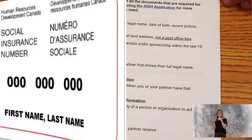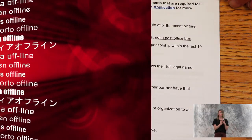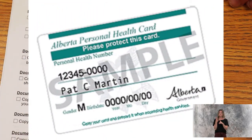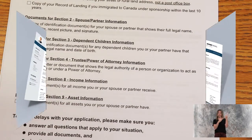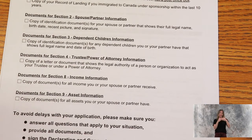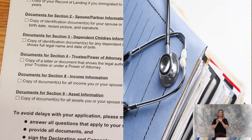There is a checklist of items you need to bring to have your AISH application filled out: identification for yourself, your spouse or partner, and your children; proof of an Alberta address; work history for your last four jobs with start and end dates; and your family doctor's name, address, and phone number.